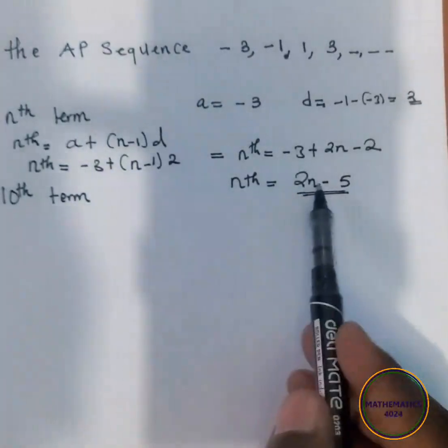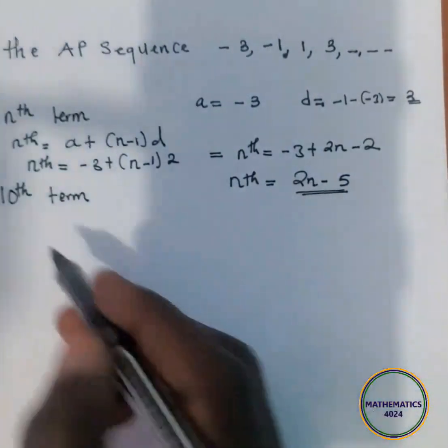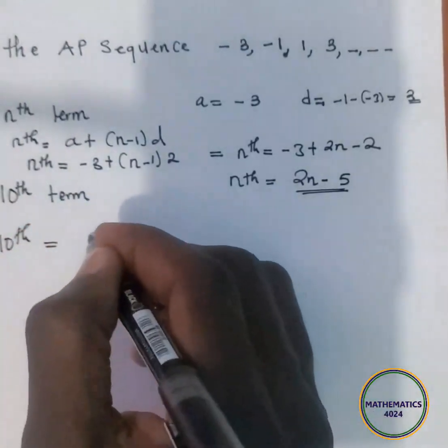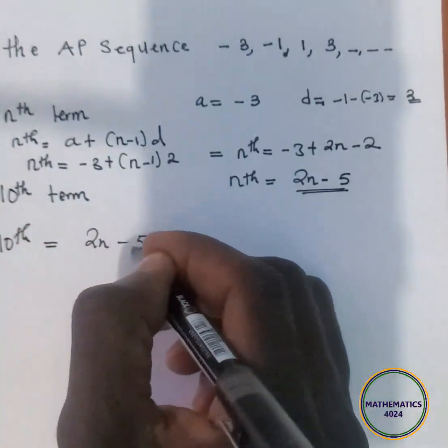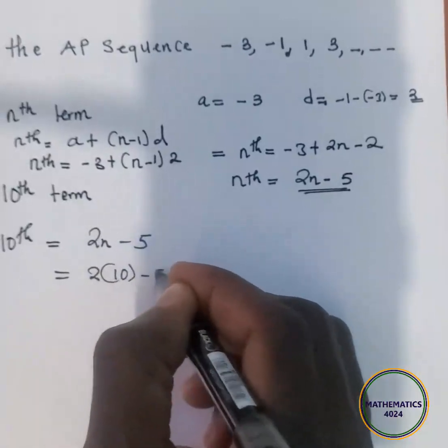For the 10th term, since we know the nth term, we just plug in where we put 10. So our 10th term will be equal to 2n minus 5, which will be 2, then we put 10 here, minus 5.